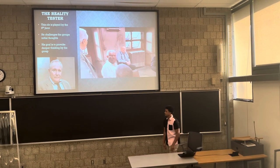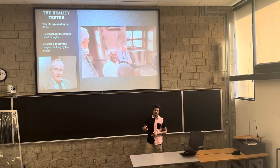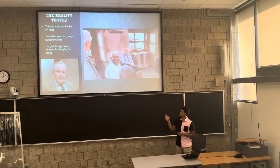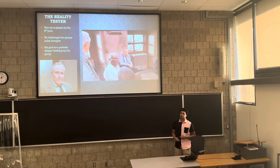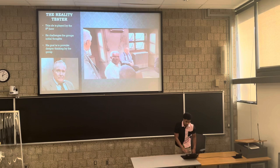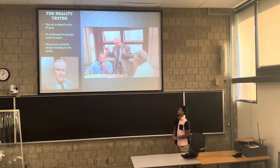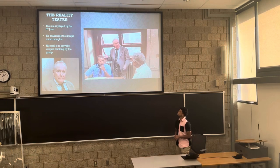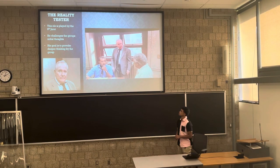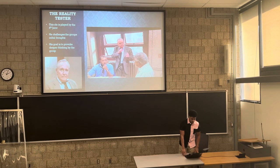The most important character, in my eyes, is the reality tester, which is the anchor. He challenges the group's initial thoughts and his goal is to provoke deeper thinking. Even in the beginning of the movie, when they voted and he was the first person standing against 11, he stood his ground and provoked deeper thinking until he got one person to change to a not-guilty vote. In this clip he demonstrates how he provokes the group's minds, pointing out that it takes 10 seconds for an elevated train to pass a given point, and therefore the train was roaring by the old man's window for a full 10 seconds — testing everybody's thinking and drawing out more information.